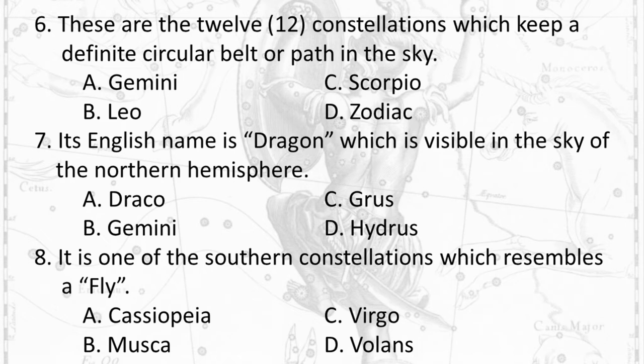Question 6: These are the 12 constellations which keep a definite circular belt or path in the sky. A. Gemini B. Leo C. Scorpio D. Zodiac.